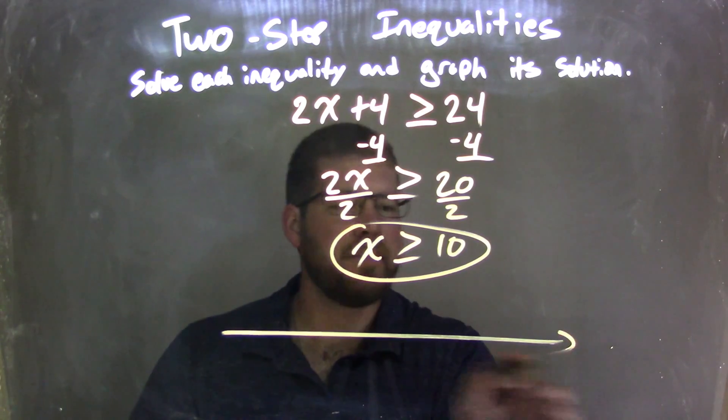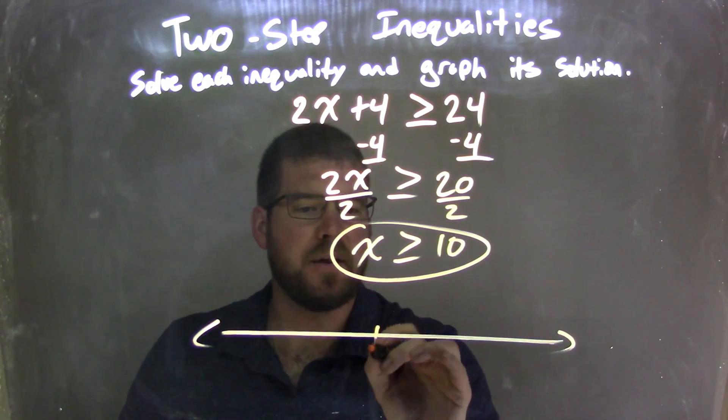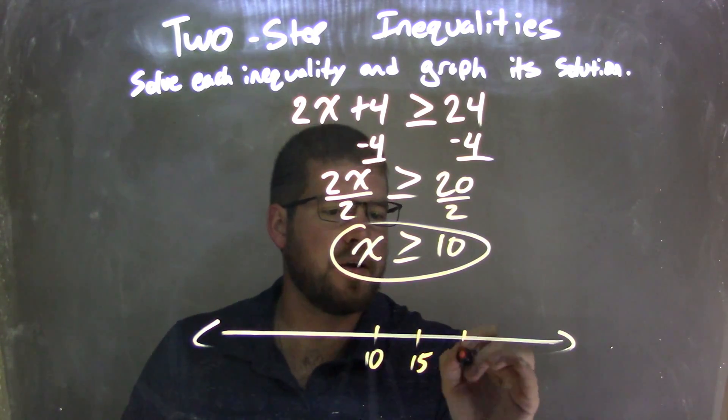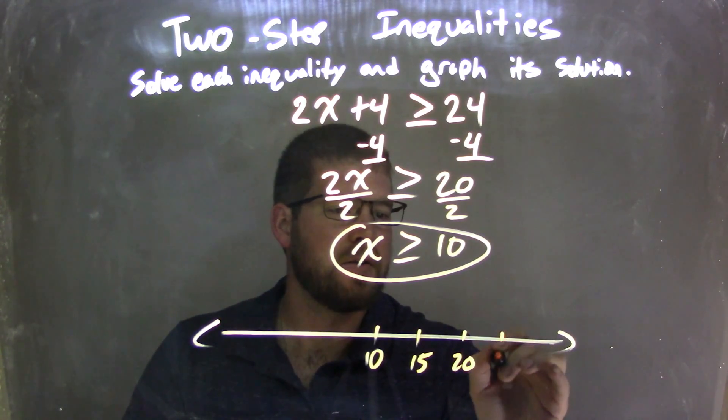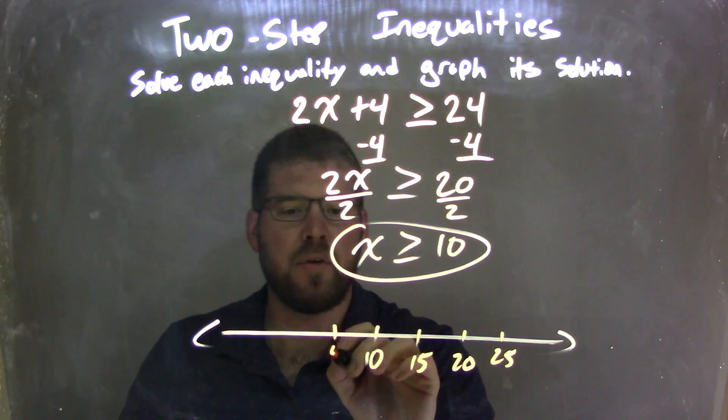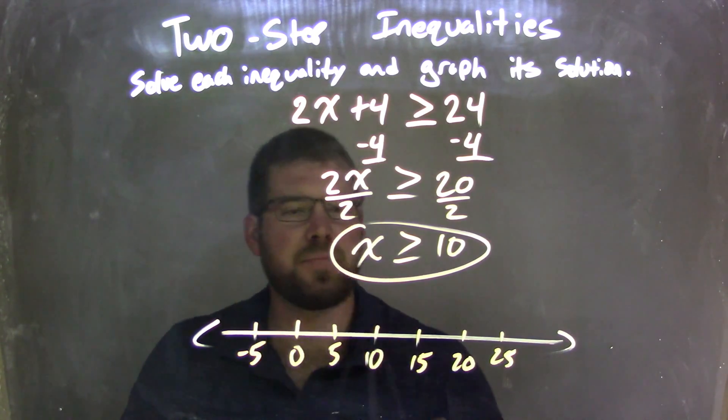So let's graph this on the number line. Let's put 10 here, and let's go by 5, so we have 15 there, and 20 here, and 25, and down here we have 5, 0, and negative 5.